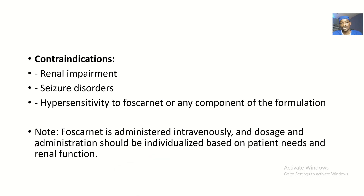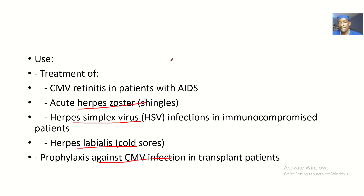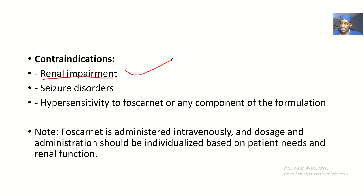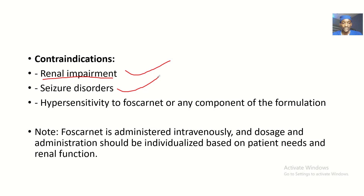Contraindications: individuals that have renal impairment should not use Foscanet, because most of Foscanet — over 80 to 90 percent — is excreted through the urine. If you have renal impairment, drug accumulation and toxicity can occur. Foscanet is also contraindicated in patients with seizure disorders or those with hypersensitivity to Foscanet or any component of its formulation.